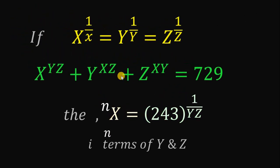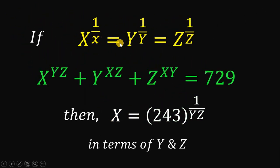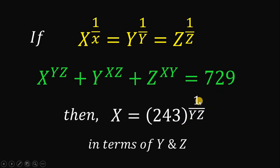Therefore, given the equation x raised to 1 over x equals y raised to 1 over y equals z raised to 1 over z, and x raised to yz plus y raised to xz plus z raised to xy equals 729, the value of x in terms of y and z is 243 raised to 1 over yz. And as always, we are done.